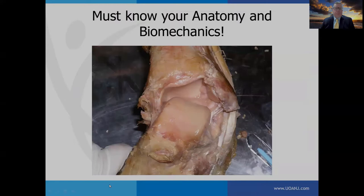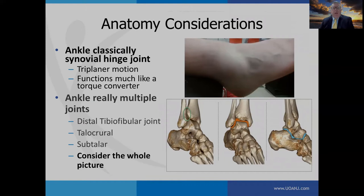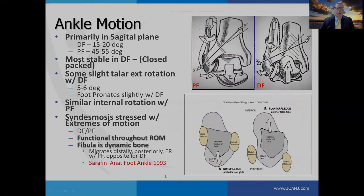To be proficient at managing ankle sprains, you need thorough knowledge of anatomy and biomechanics. The ankle is classically considered a synovial hinge joint, but it's really multiple joints: the distal tib-fib joint, the talocrural joint, and the subtalar joint. Ankle motion primarily occurs within the sagittal plane, and the ankle is most stable in dorsiflexion — the closed-packed position where bony stability provides support. The syndesmosis is stressed throughout the entire range of motion, mainly at the extreme ranges of dorsi- and plantar flexion. The fibula migrates distally, posteriorly, and externally rotates to hug the lateral talus with plantar flexion, reversing with dorsiflexion.